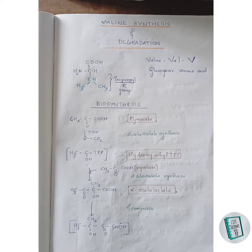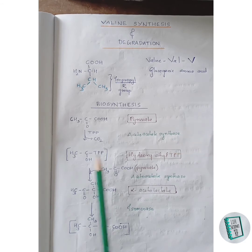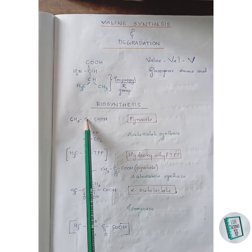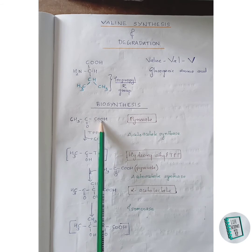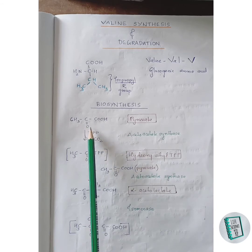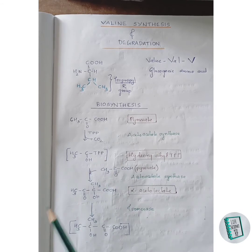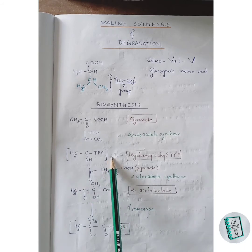The first reaction in valine biosynthesis is a thiamine pyrophosphate (TPP) dependent reaction. The attachment of TPP along with the removal of CO2 from pyruvate leads to the first reaction product, hydroxyethyl-TPP. TPP gets attached directly with this carbon, the COO group of the carboxyl gets removed as CO2, and a hydrogen attaches to the oxygen, forming the first compound: hydroxyethyl-TPP.